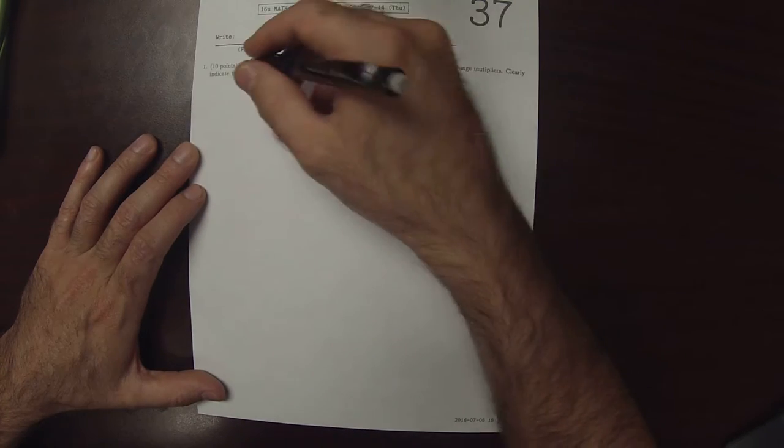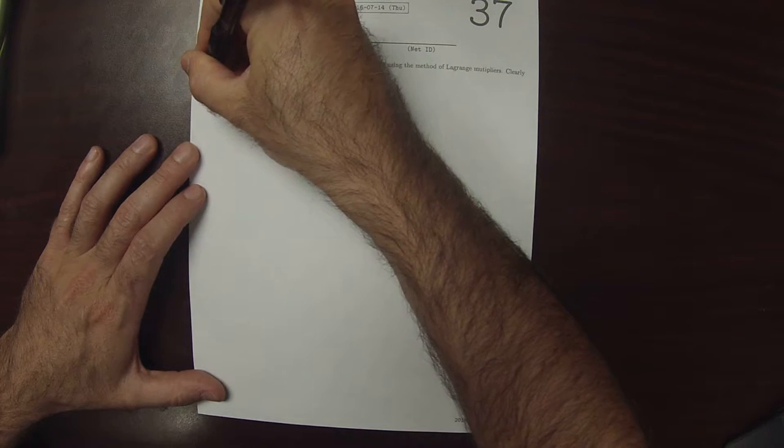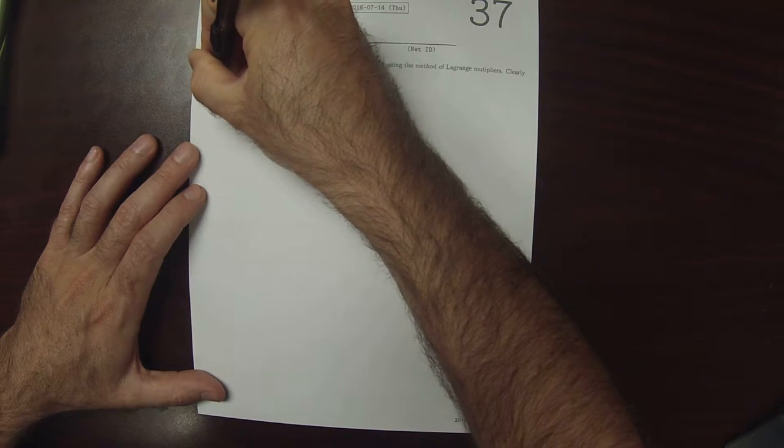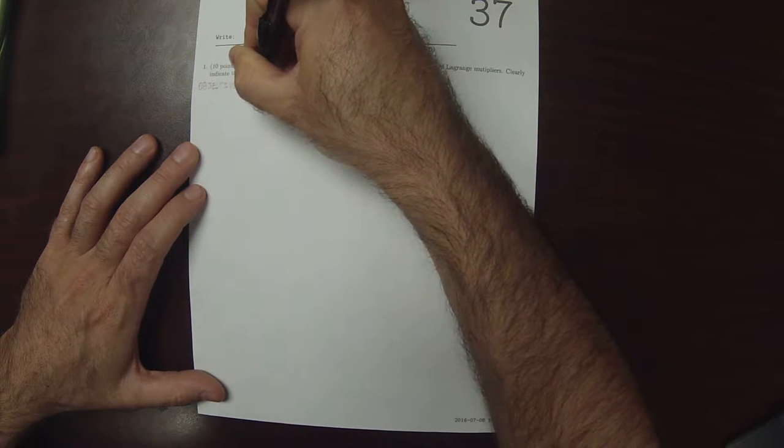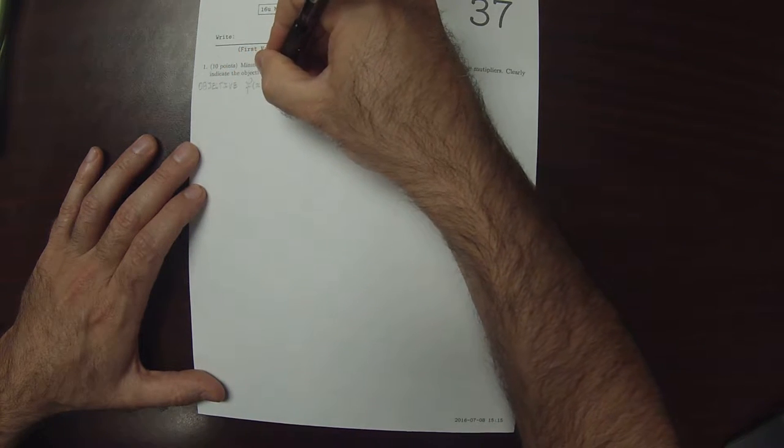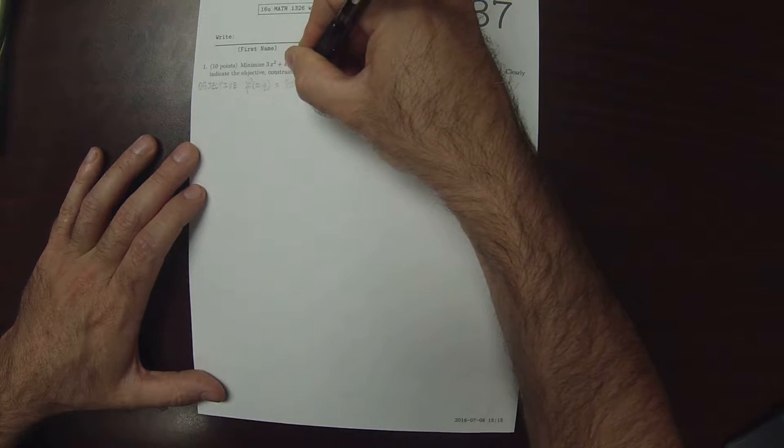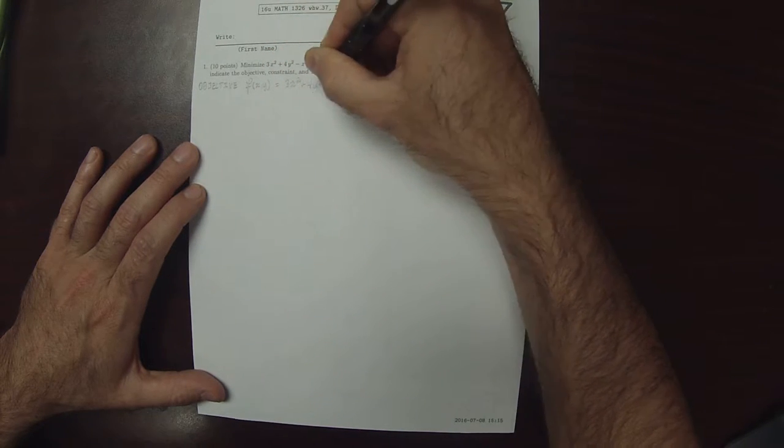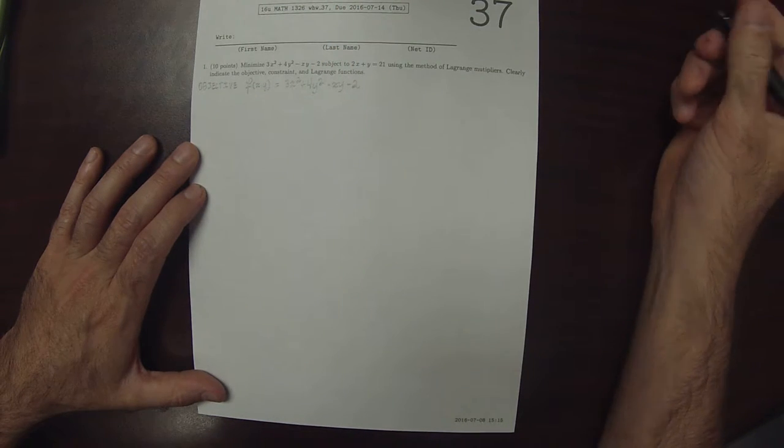And it says clearly indicate objective, constraint, and Lagrange functions. So the objective, I'll call little f, that's 3x squared plus 4y squared minus xy minus 2. This is the function to minimize.